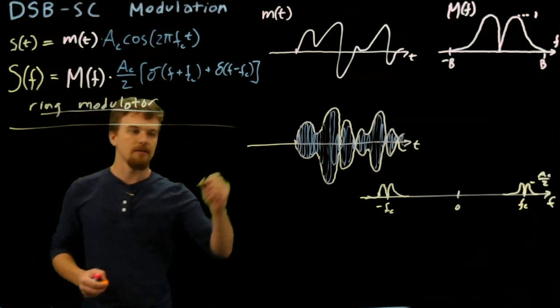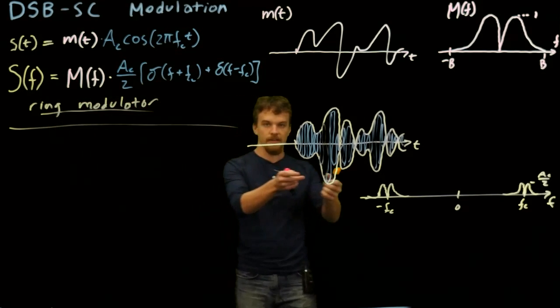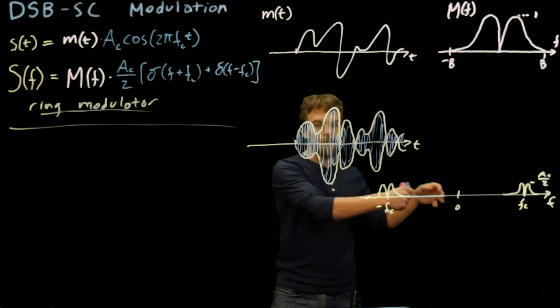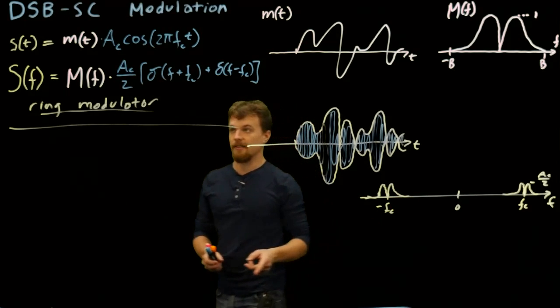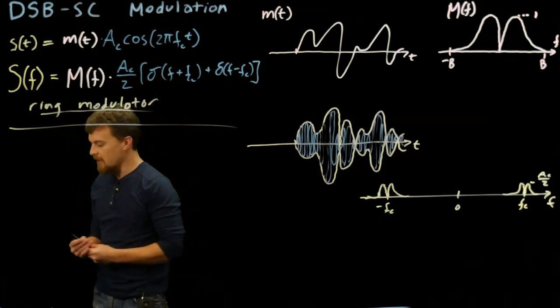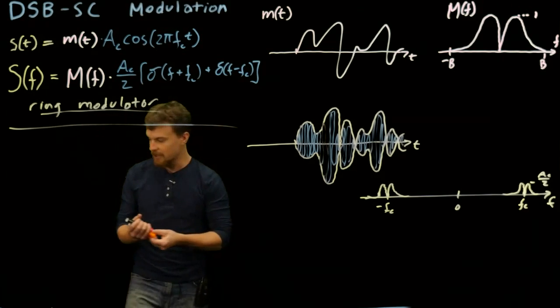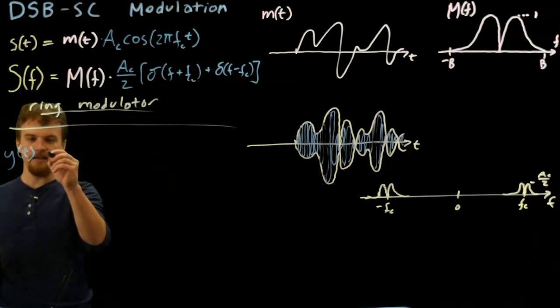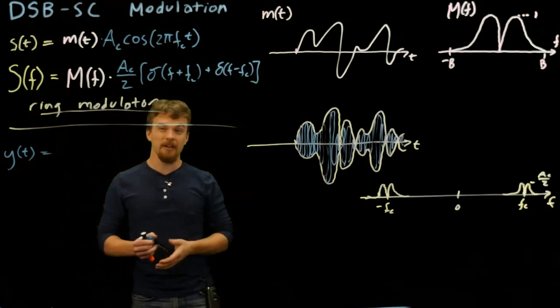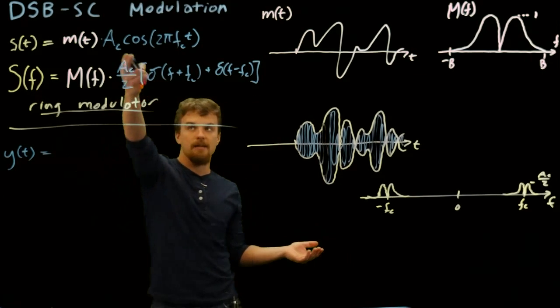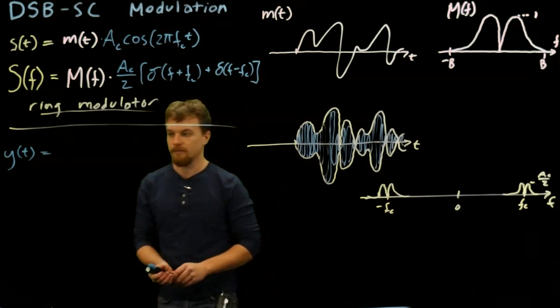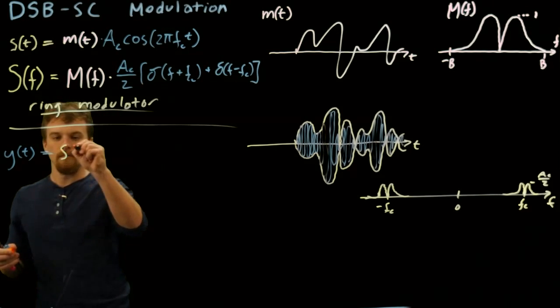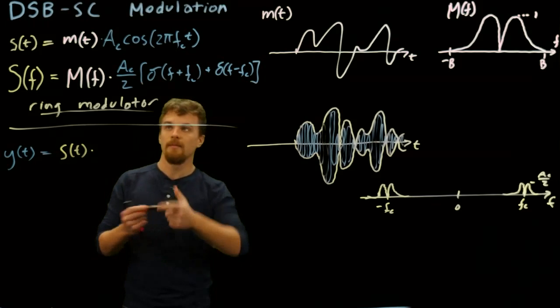That's how we would come up with this message. Now the issue is we have a receiver. This is out in the air, we got to receive it, and then we got to turn it back into something that looks almost exactly like this. That's the whole point—we're trying to transmit a message and get it back somewhere. So we have to demodulate this. We talked in the modulation video how we can just multiply this again by the same frequency. We can low pass filter it.